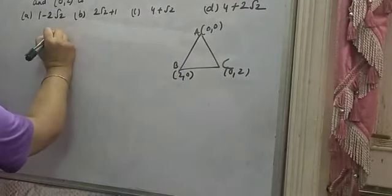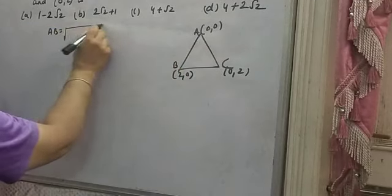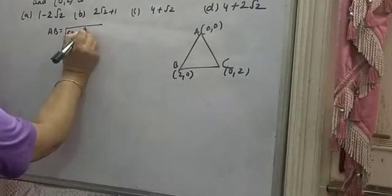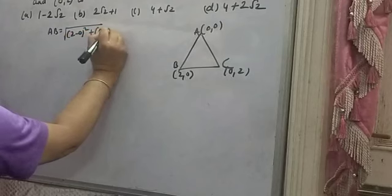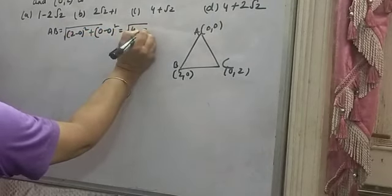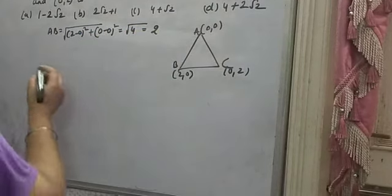First of all, AB distance formula: X1, Y1, X2, Y2. AB equals square root of (X2 minus X1) squared plus (Y2 minus Y1) squared. This is (2 minus 0) squared plus (0 minus 0) squared equals 4. Square root of 4 is 2. Distance will be positive.